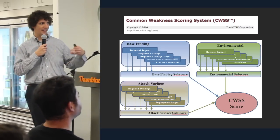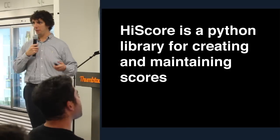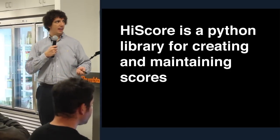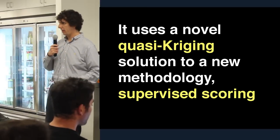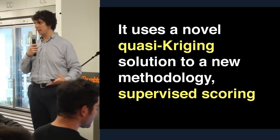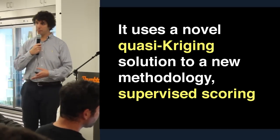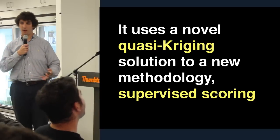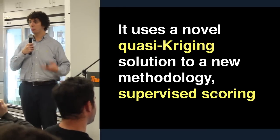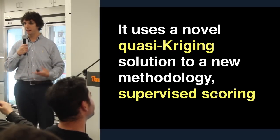Scores come up a lot, and HiScore is a Python package that can help you make and maintain scoring functions. There are two real advances here: one is on the philosophical side, and the second is on the algorithmic side. The philosophical side is called supervised scoring, which is a new way of thinking about how you construct a score.